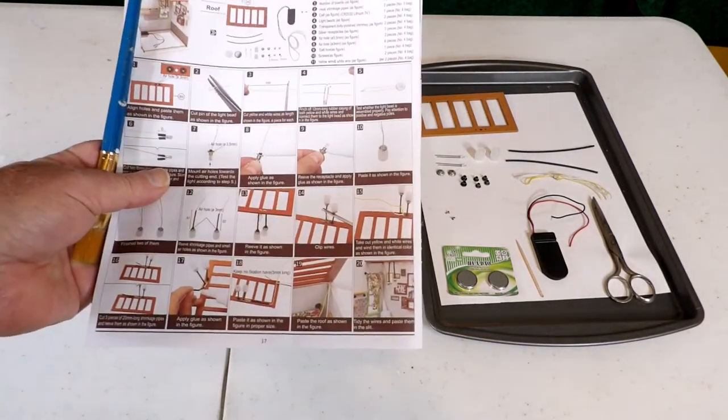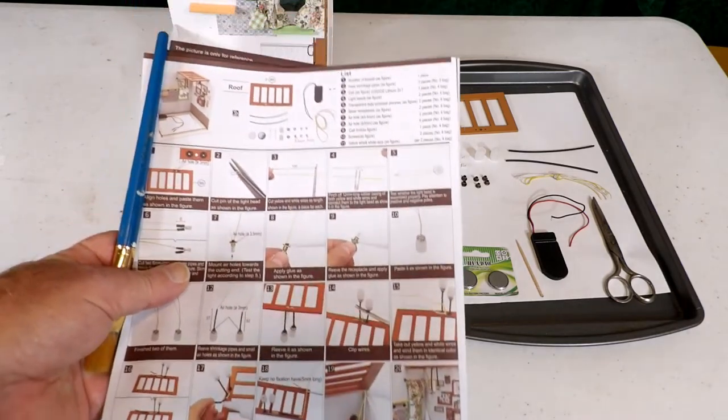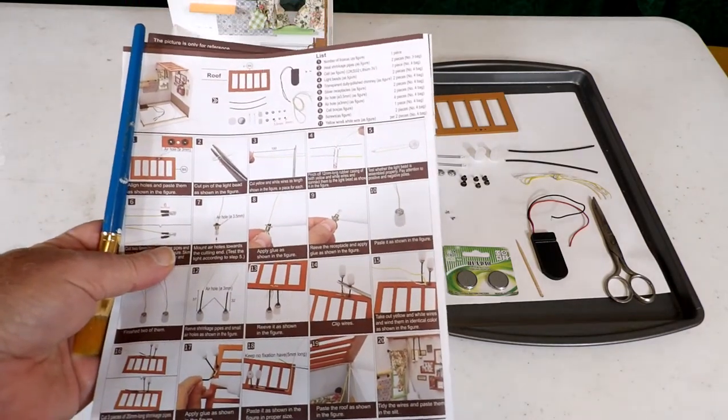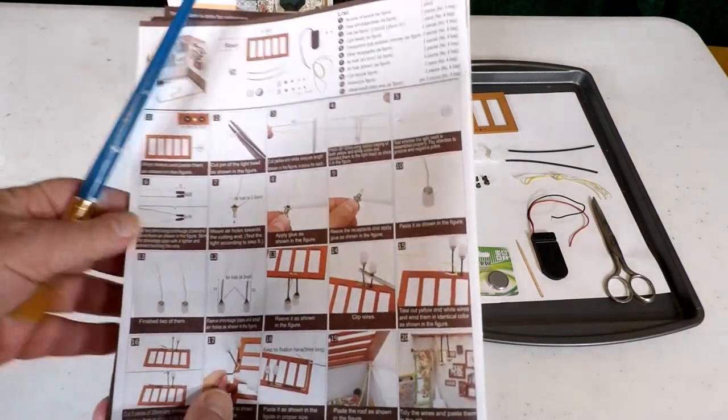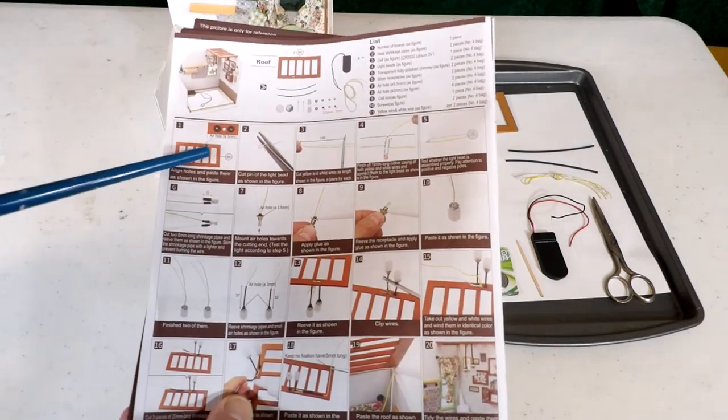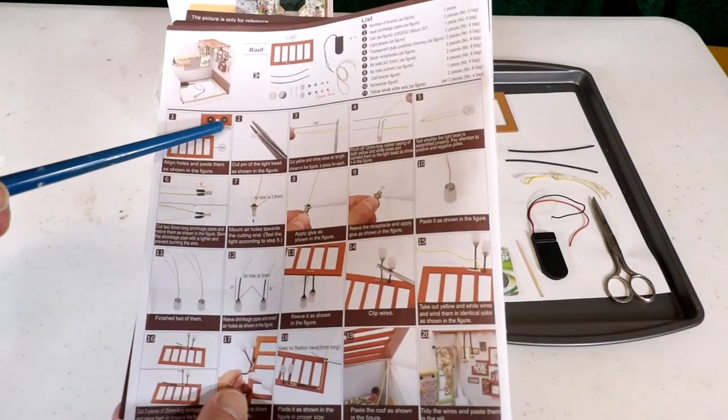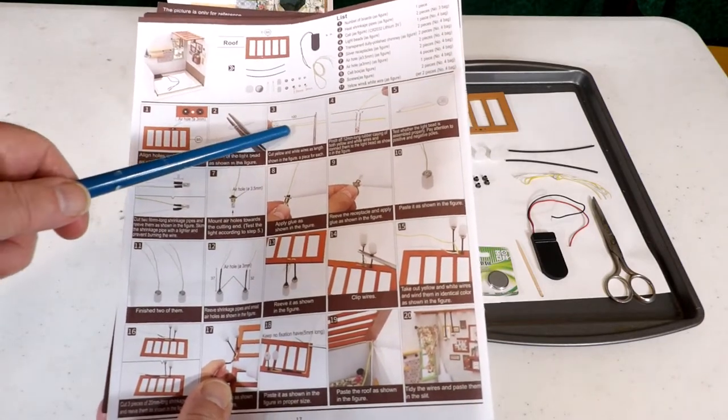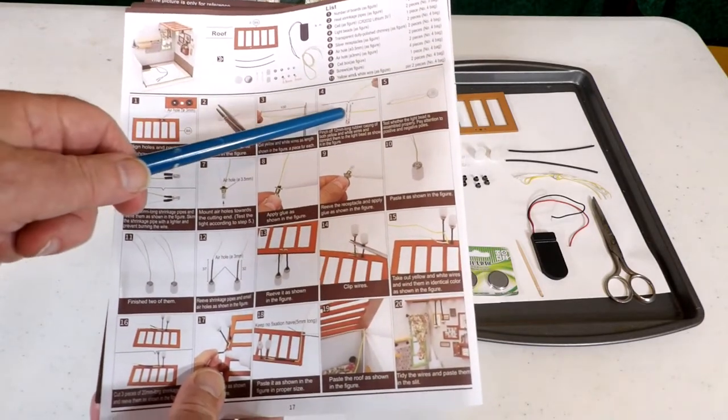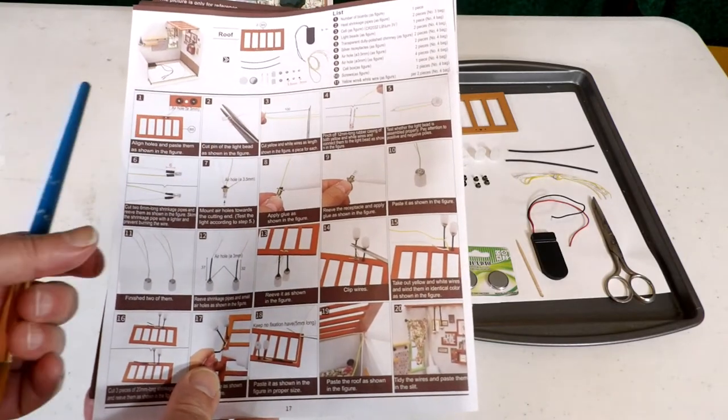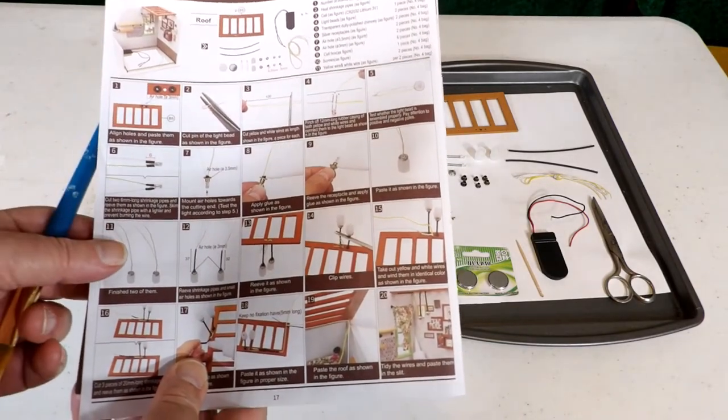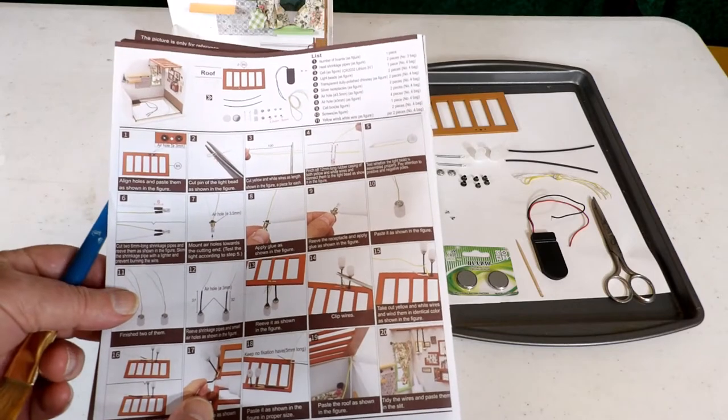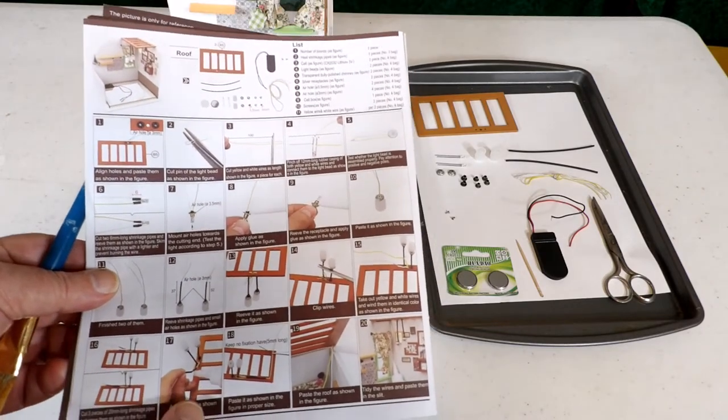We've got our plans assembled, so the next step will be to put these—I guess they call them grommets—in the roof. And then we're going to clip off the lights and wire them. So we'll get back and show that accomplished.